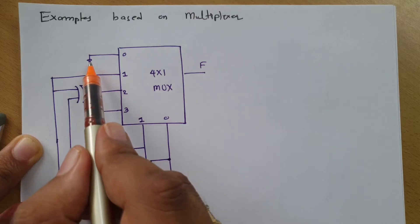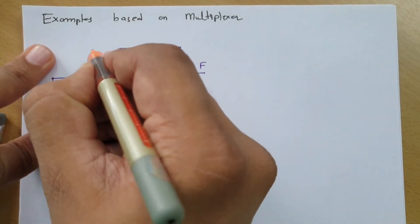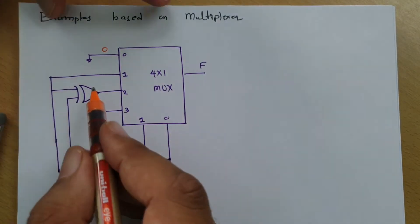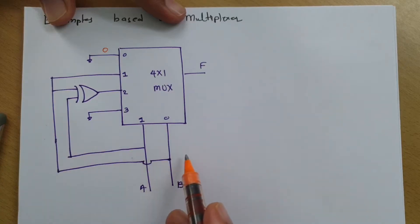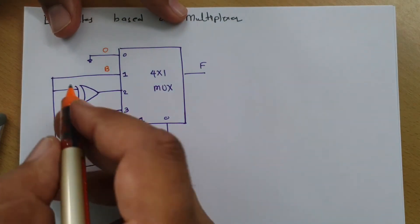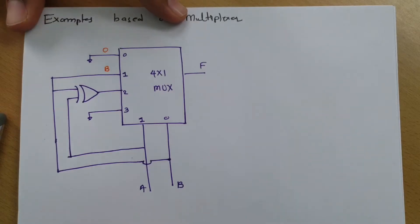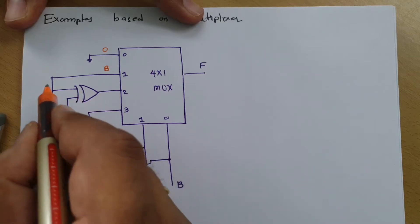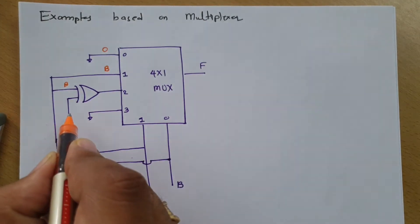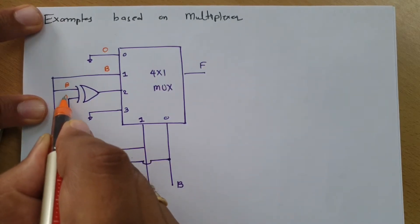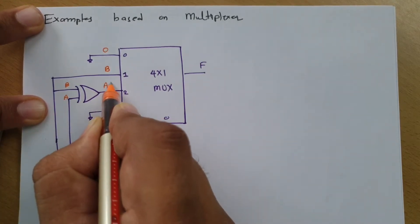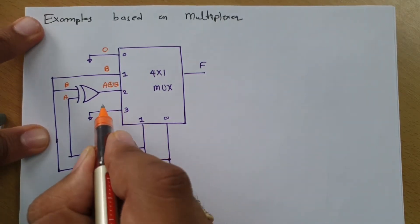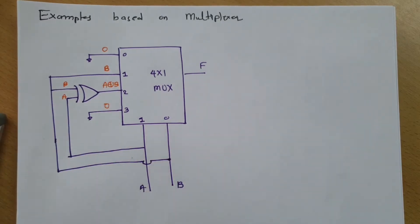If you observe terminal 0, that is assigned with logic 0. If you observe terminal 1, it is connected to B, so terminal 1 is B. If you observe terminal 2, that is the XOR of two terminals — this is B and this terminal is A — so we have A XOR B at terminal 2. And if you observe terminal 3, it is connected to ground, so it is assigned with 0.